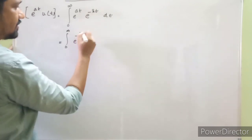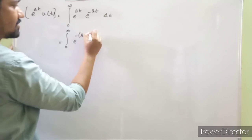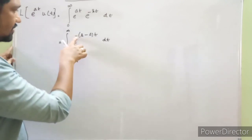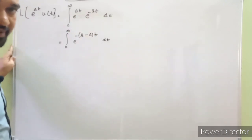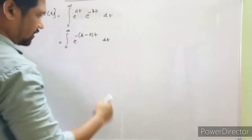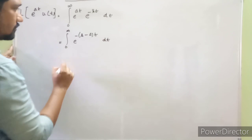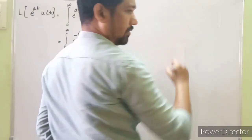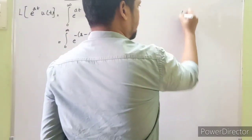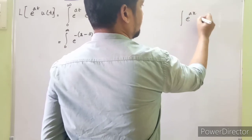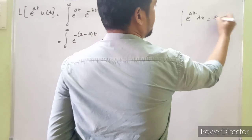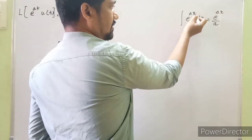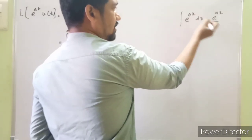The next step is to take out the negative as common from the exponent terms — taking negative as common from the term (-st + at) gives us the combined exponent as minus of (s minus a) into t. So we have the integral from 0 to infinity of e raised to minus(s minus a)t dt. In your previous grades, you came across the important relationship: integral of e^(ax) dx equals e^(ax) divided by a, where the coefficient of x comes down.